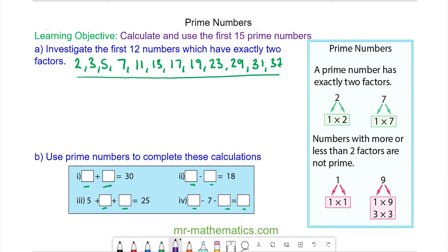For question one, two prime numbers that add to make 30 could be 13 and 17. We could also have had 19 and 11, or 23 and 7.